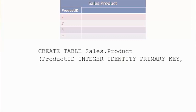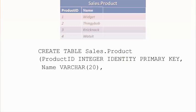Only one column can have the identity property within a given table, and only one column can be the primary key — unless you've got a composite of multiple keys. So we've got our product ID column. The next column we're going to create is a column called 'name' of type varchar(20). Varchar means varying-width characters — it's a string value that can have any number of characters up to 20.